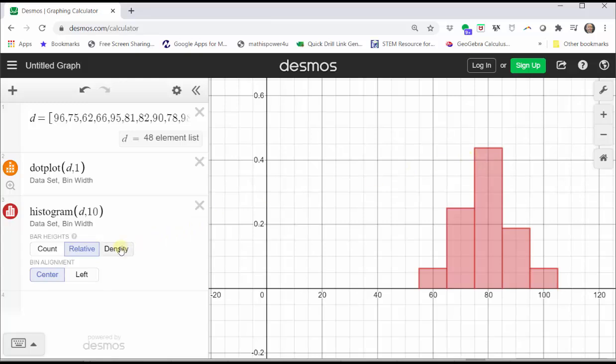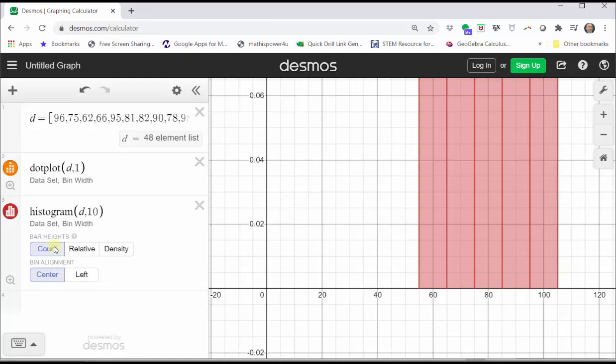If we click on density and then click zoom fit, the sum of the area of the bars is equal to one. Let's go back to count, and let's adjust the window again by pressing zoom fit.